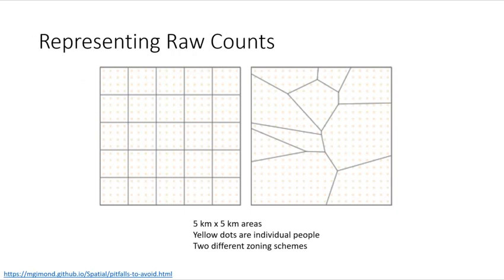So here's the setup. We've got a whole bunch of people or maybe their houses that are sort of evenly distributed across the landscape. On the left we have five kilometer by five kilometer areas. These are, let's call them blocks or census blocks, but a very evenly distributed aggregation scheme.